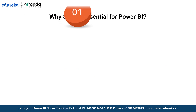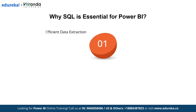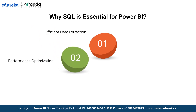Let us see some of the key reasons. First, efficient data extraction: SQL allows you to fetch only the necessary columns and rows, reducing the data load on Power BI. Using JOIN and GROUP BY in SQL minimizes data processing inside Power BI. The next key reason is performance optimization: large datasets slow down Power BI if not optimized. SQL pre-aggregates data, reducing the need for complex DAX calculations. Indexes and views in SQL help speed up query performance in Power BI.